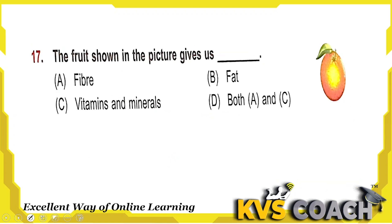Next: the food shown in the picture gives us what? The picture shows an orange. Fruits give us fibers, vitamins, and minerals, but not fats — fats we get from oil, ghee, etc. So this orange gives us fiber, vitamins, and minerals. Both options A and C are the right answer.